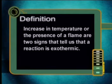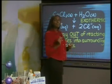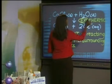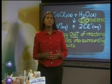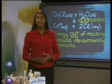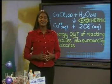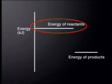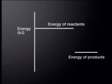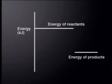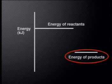The hot solution makes the test tube hot. The test tube makes the air around it hot, and if the test tube was an instant hot pack it could make sore muscles hot too. We call changes that transfer energy into the surroundings exothermic changes. Increasing temperature or the presence of a flame are two signs that tell us that a reaction is exothermic. The prefix 'exo' means outside. Energy is transferred out of reactant molecules during exothermic reactions. We can represent this energy change on an energy axis. This horizontal line represents the energy of water and the solid calcium chloride — the reactants before we mix them.